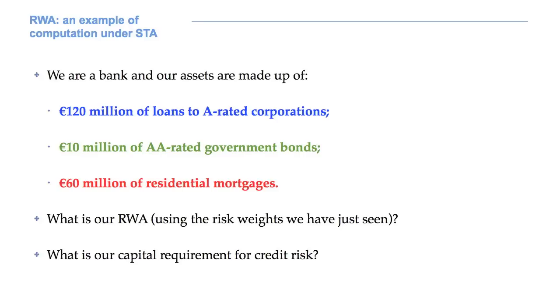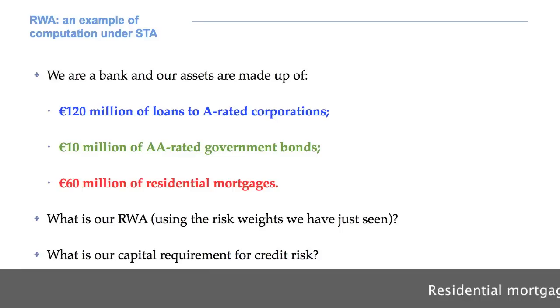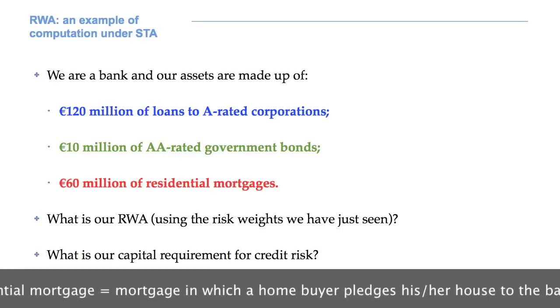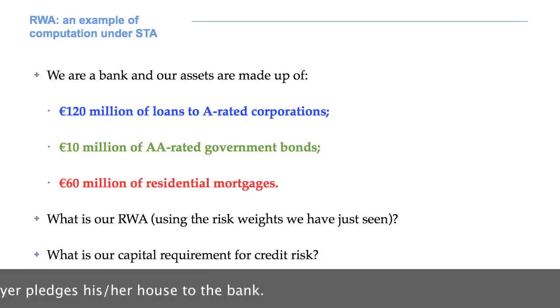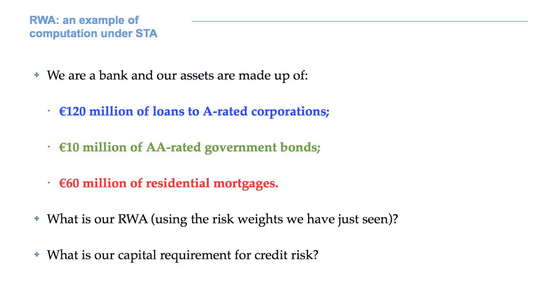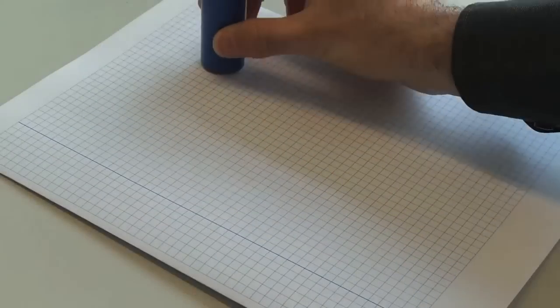At the end of this course, I want you to be able to use most of the things we see together in practice. Assume we are a bank. Our assets include 120 million euros of loans to A-rated corporations, 10 million of AA-rated government bonds, and 60 million euros of residential mortgages. What is the value of our risk-weighted assets? What is our capital requirement for credit risk?